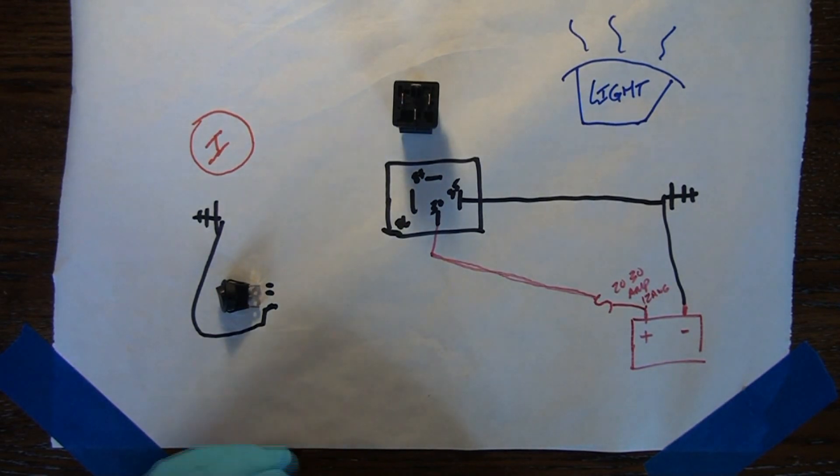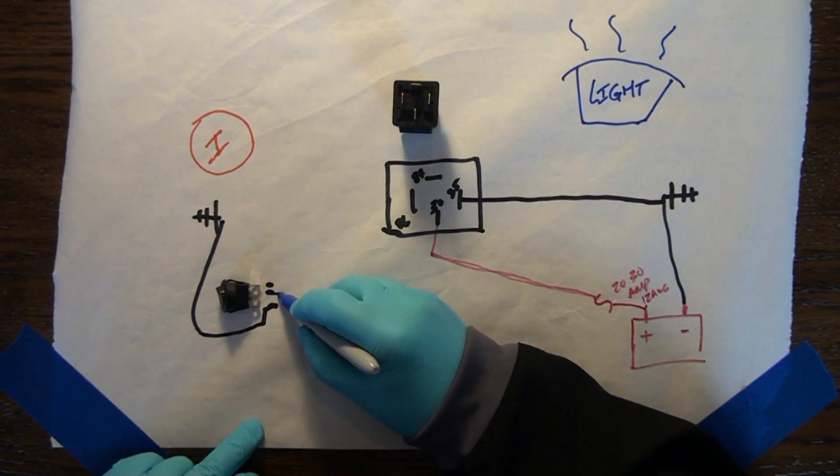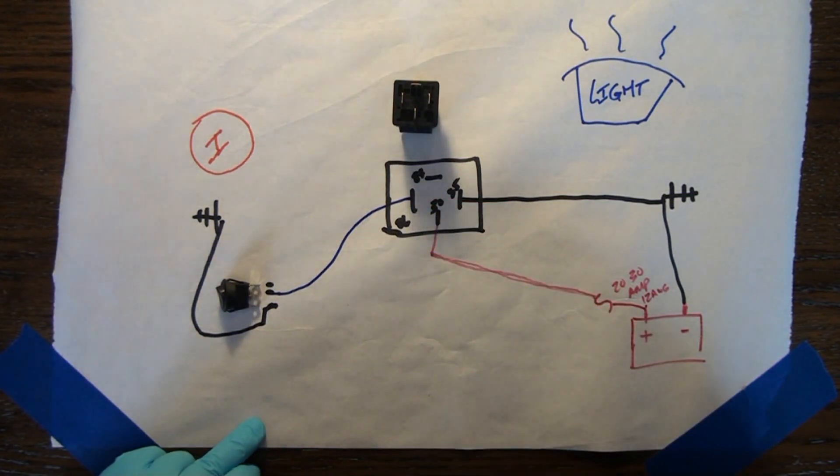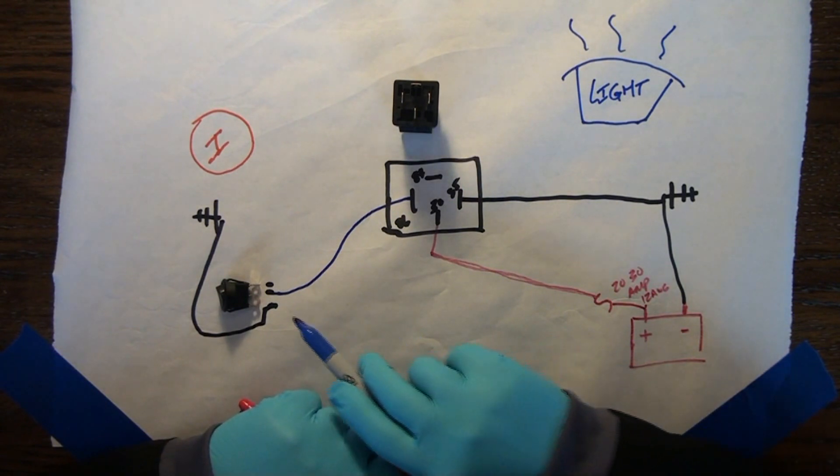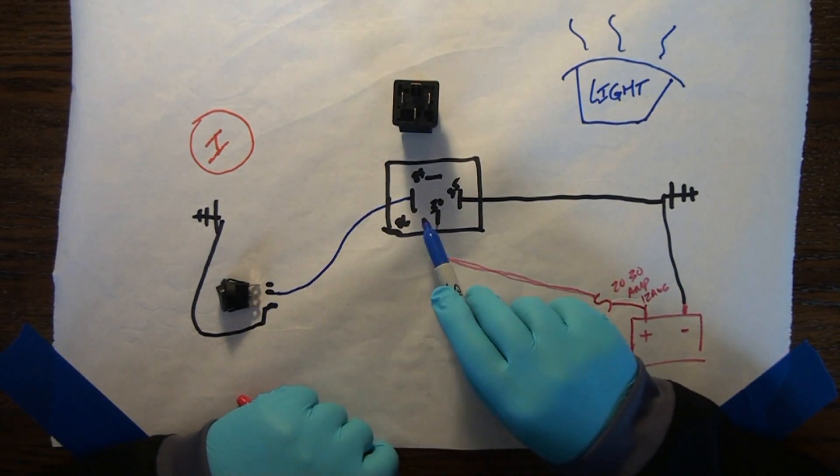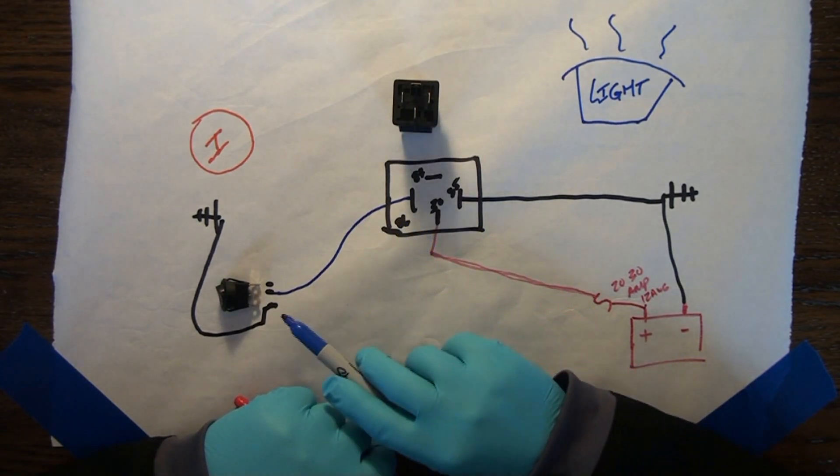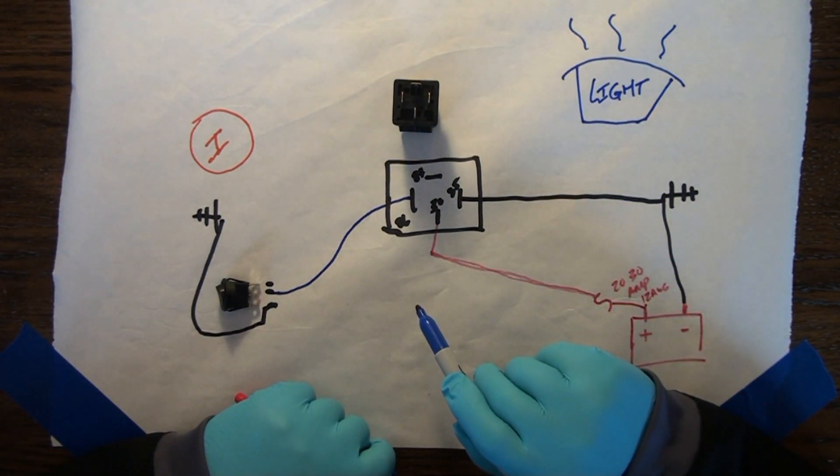The middle terminal on the switch is going to turn on or activate the relay. The middle terminal goes to the number 86 terminal on the relay. And that is ultimately what's going to turn on your light, but we'll get over that in just a second.